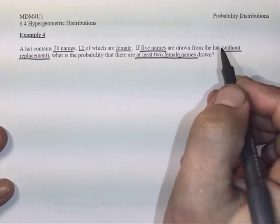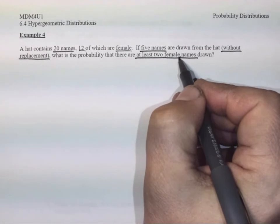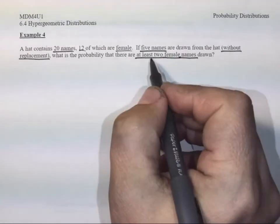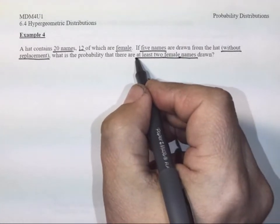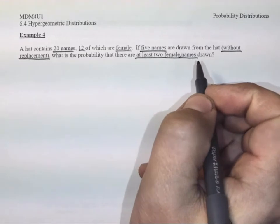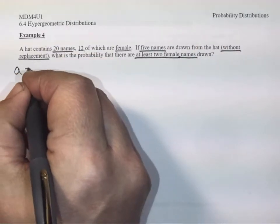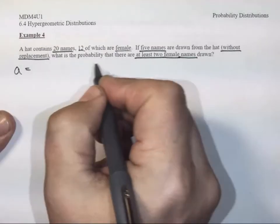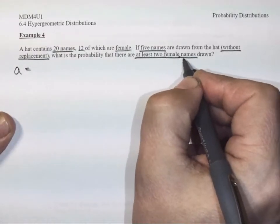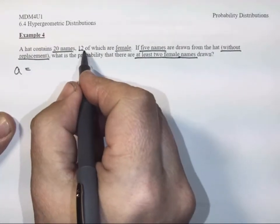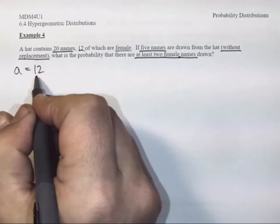Right off the bat, I know that I'm looking for female names. That's a success to me, and I'm specifically looking for at least two female names drawn. So let's set this up by saying the number of successful things here, when I'm talking about female names being drawn, if there's 12 female names, the number of successful things is 12.